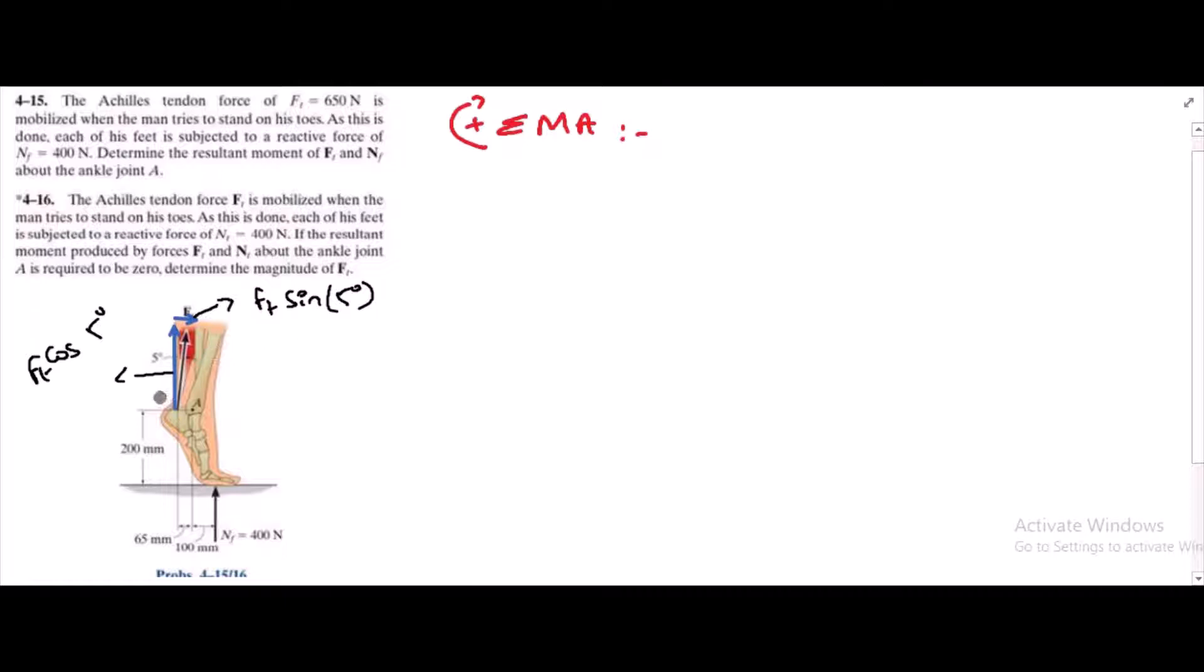If I sum up the moment, then the force Ft cos 5 degrees has a moment arm about point A of 65 mm. I can write it as 0.065 in terms of meters and it is trying to rotate about point A clockwise, so I am taking it as positive.